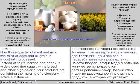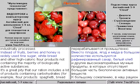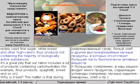Only 70 years before, the country's population used products from wild nature or subsistence farming. Now three-quarters of meat and milk, two-thirds of eggs, and all grain is industrially processed. Instead of fruits, berries, and honey, fine sugar, white bread, and other highly caloric food products not containing the majority of biologically active substances are widely used.